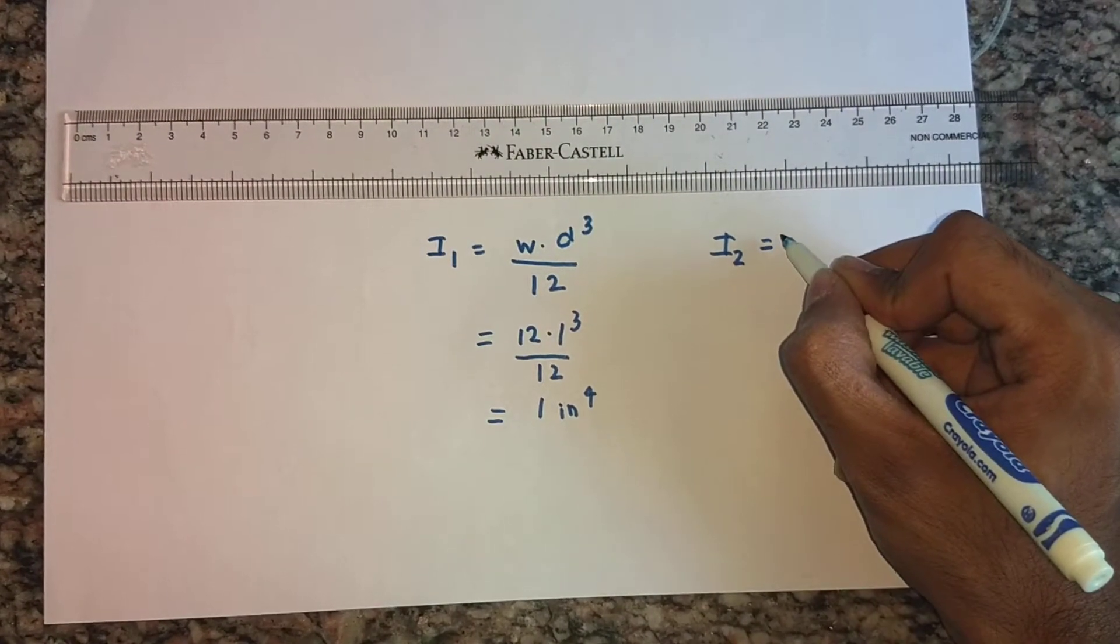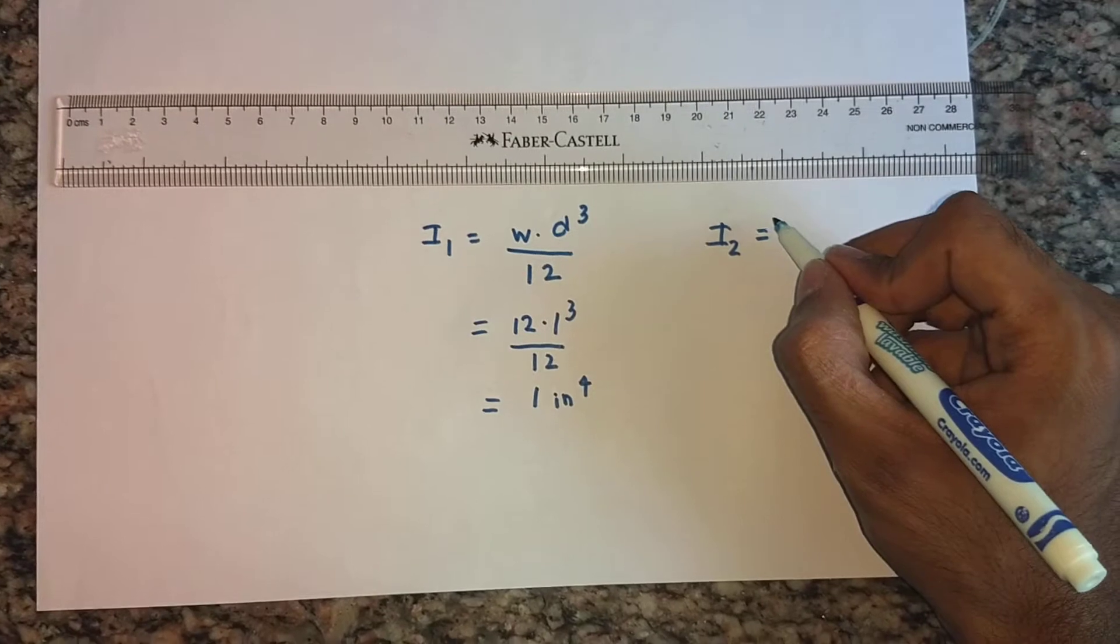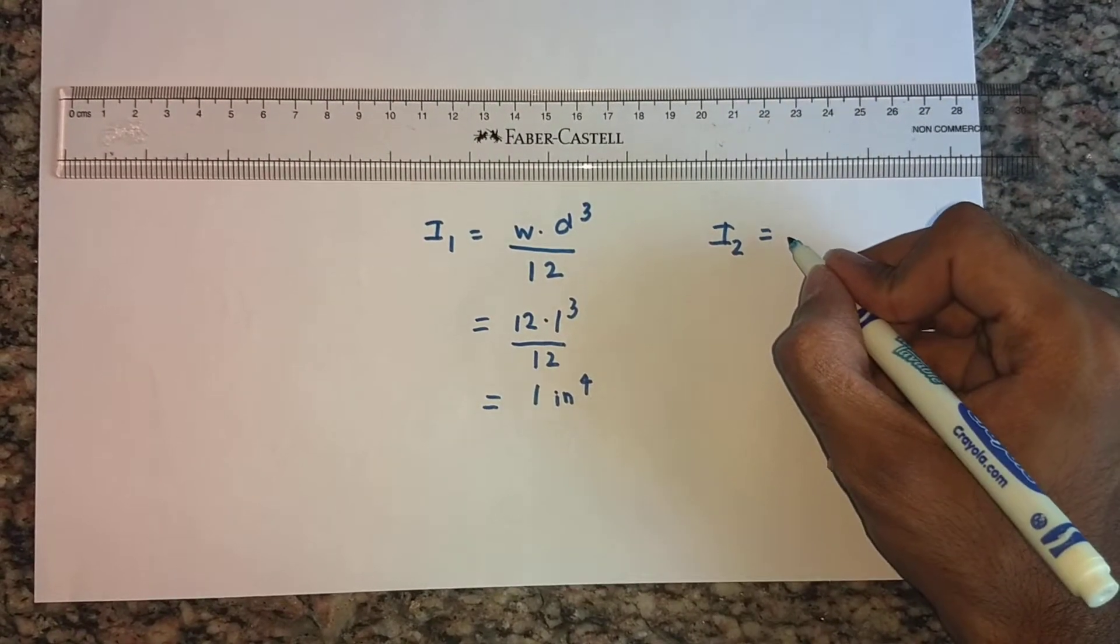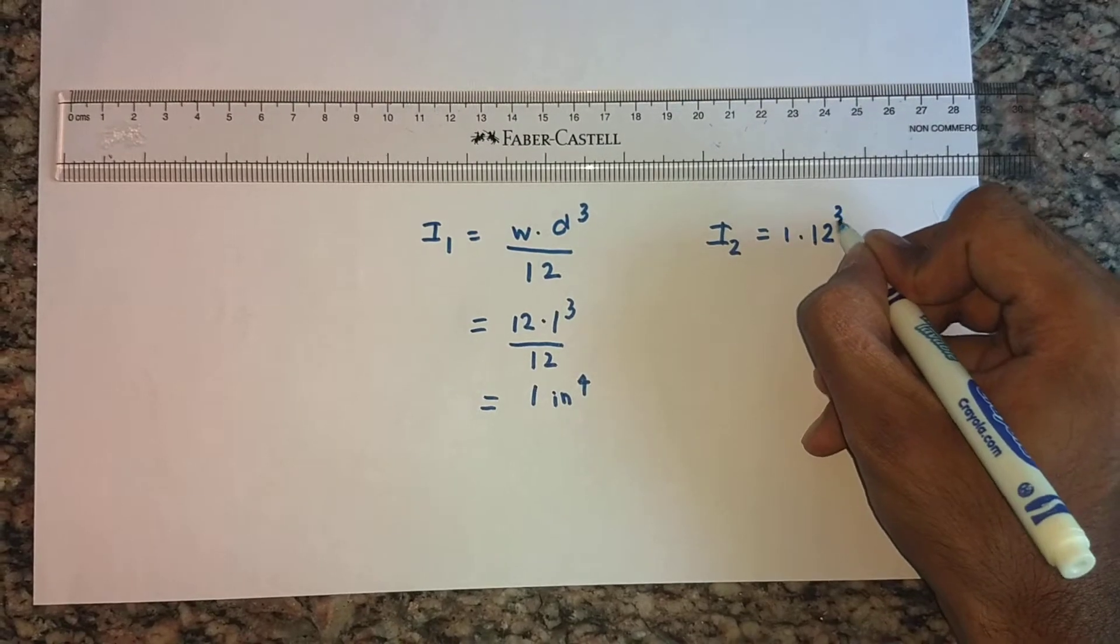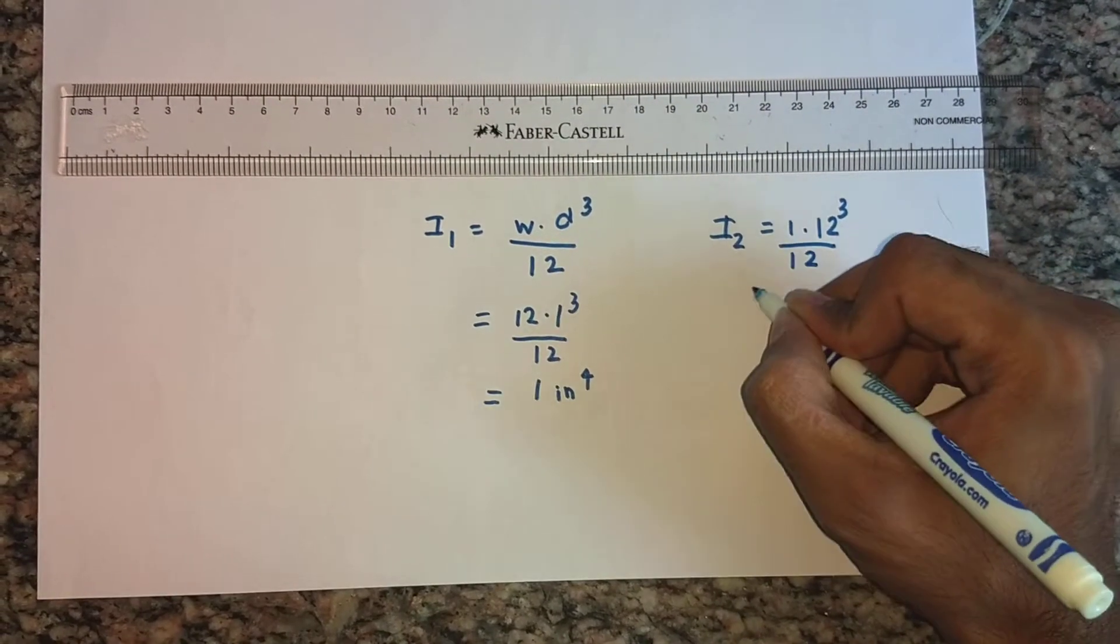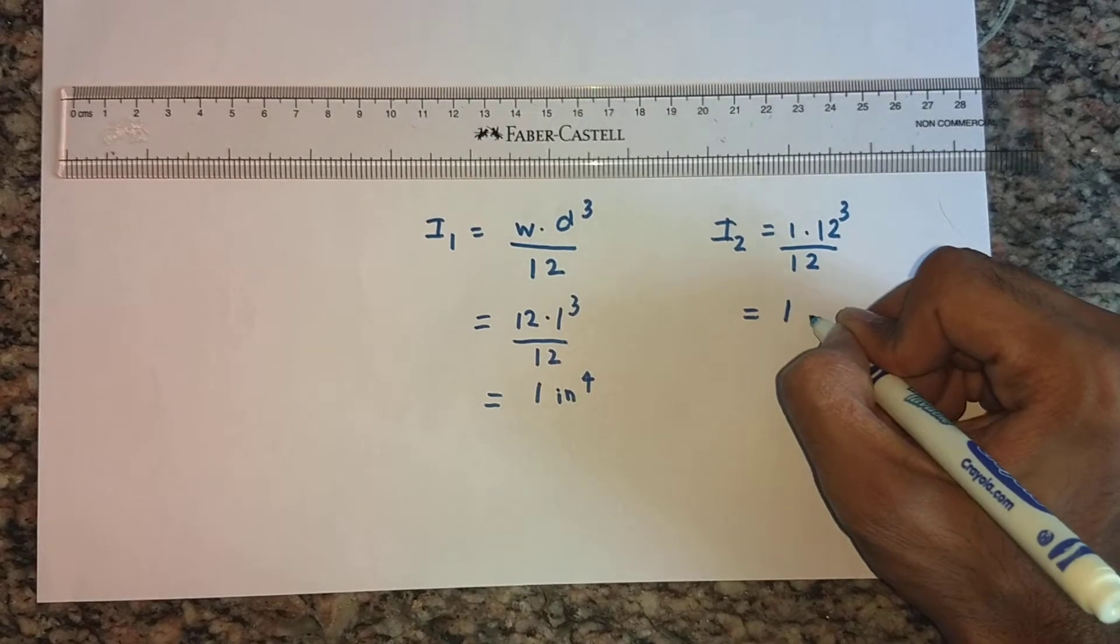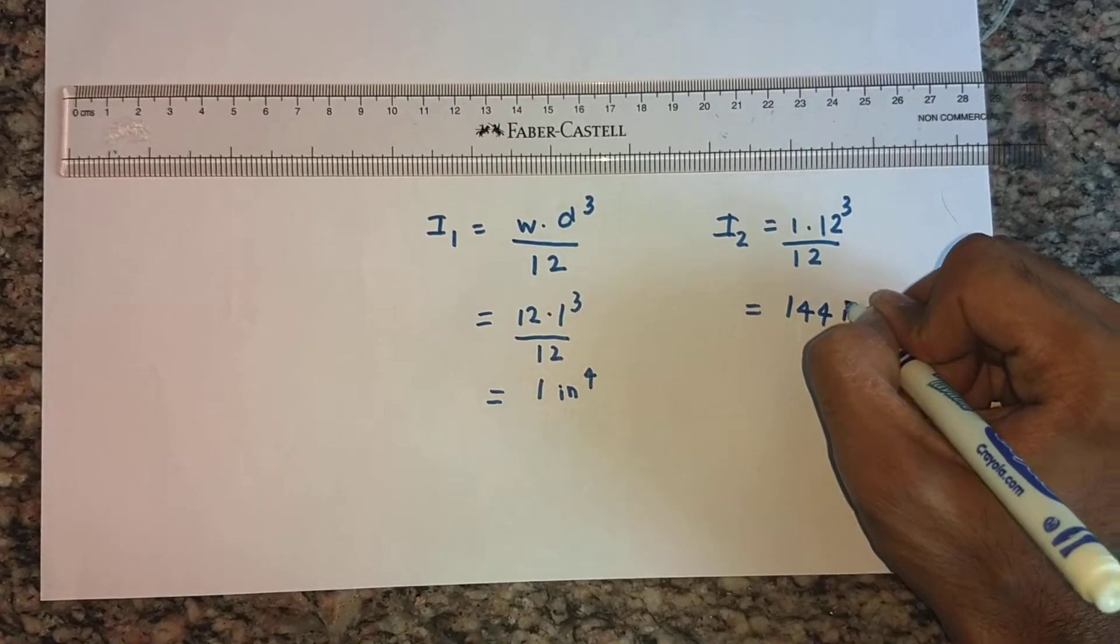So I2, what happens is W becomes D, and D becomes W. So it is 1 times 12 cubed over 12. So that gives us an answer about 144 inch power 4.